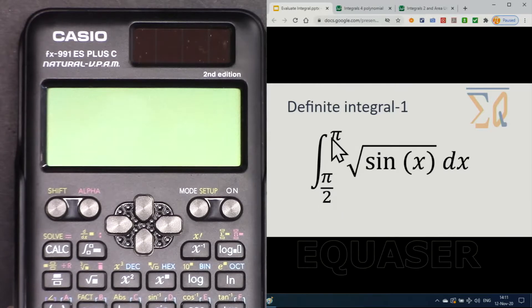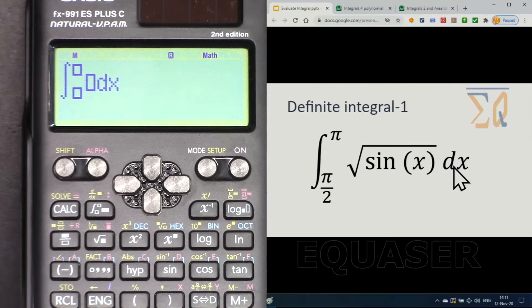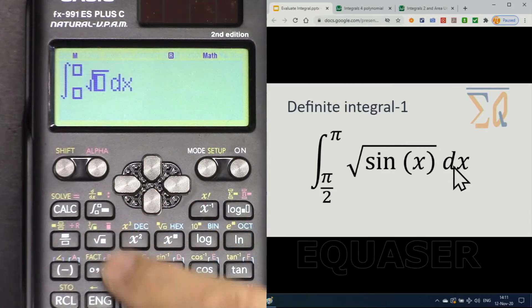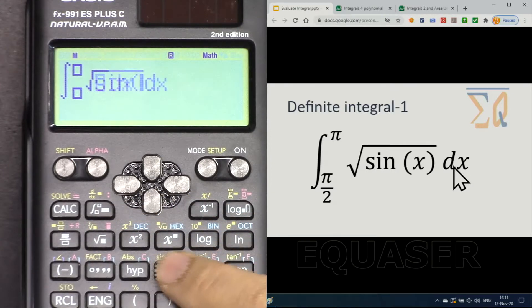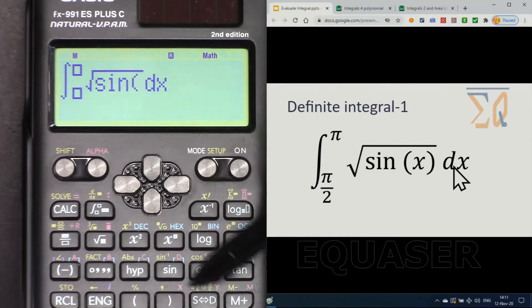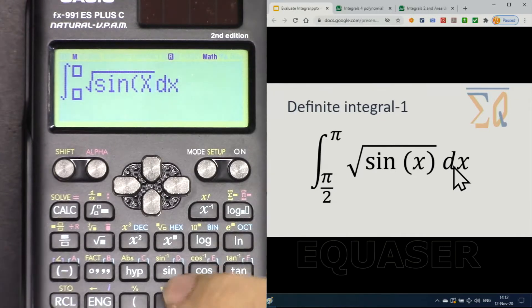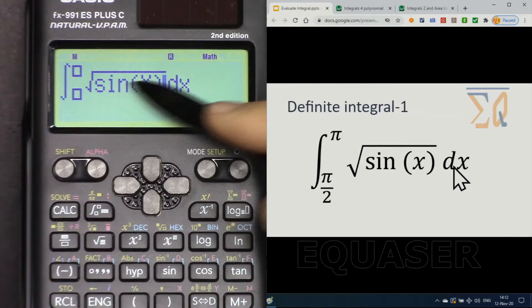We press integral, and we press the square root function, sine, and then we enter x. For x, we press alpha and then x for the red, and then close it. This is done. Now,